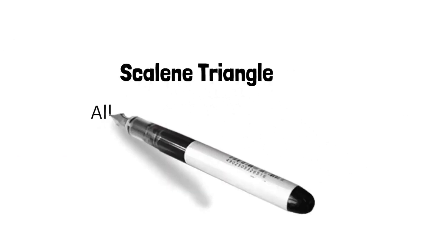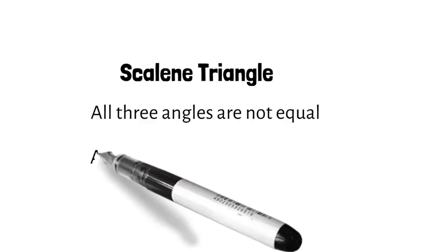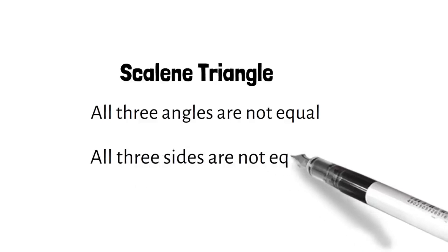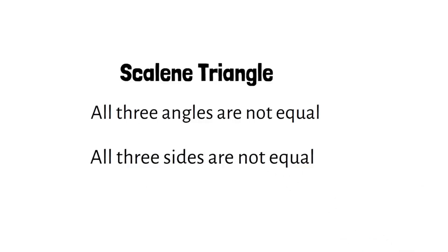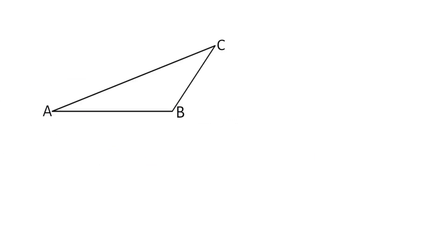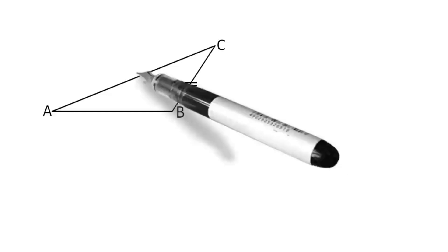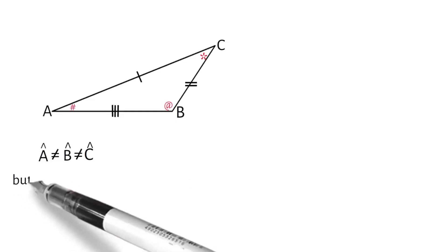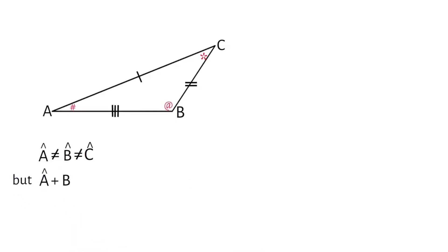Now the scalene triangle — all three angles are not equal and all three sides are not equal. Like any triangle, the three interior angles still sum up to 180 degrees. In our scalene triangle, side BC is not equal to side AC or side AB, which means angle A will not equal angles B and C, but angle A plus angle B plus angle C still sums to 180 degrees.